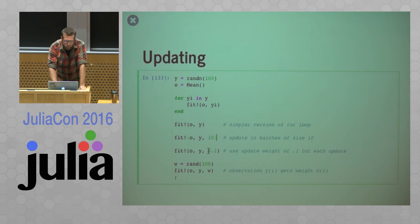We can also override the weight. So mean by default has an equal weight. If I give it a float of 0.1, it's going to use 0.1 for each update. So essentially doing an exponentially weighted mean. And I can also give it a vector of weights to use. So if I give it a vector w, observation yi gets weight wi. So there's a lot of flexibility between the weight types and how you're updating things to control how new observations influence these objects.